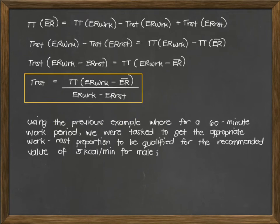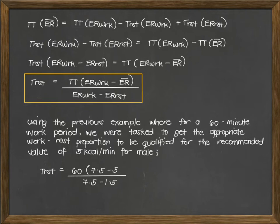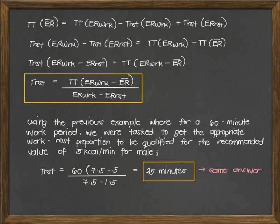Using the previous example where for a 60-minute work period, we were tasked to get the appropriate work-rest proportion to qualify for the recommended value of 5 kcal per minute for male workers: T rest equals 60 times (7.5 minus 5), all over (7.5 minus 1.5), which gives 25 minutes. This is the same answer obtained in the first example.